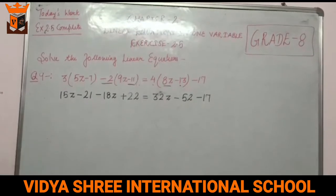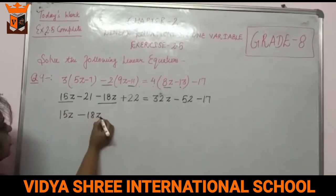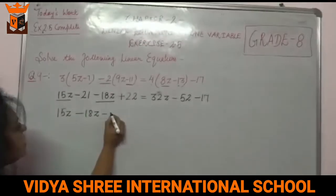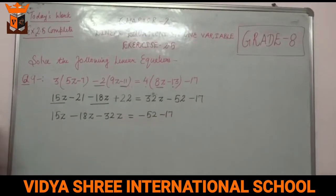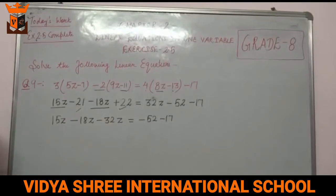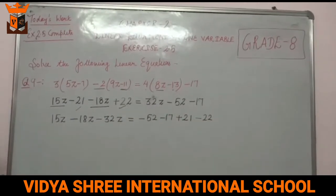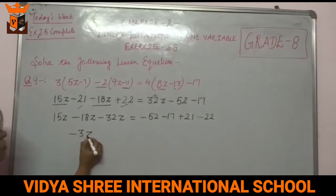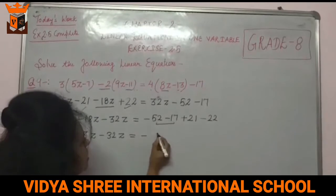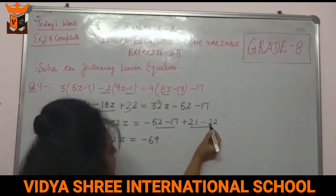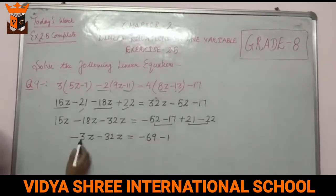Now collect all Z terms on the left and numbers on the right. Left: 15Z minus 18Z minus 32Z. Right: minus 52 minus 17 plus 21 minus 22. Calculating: 15 minus 18 is minus 3Z, minus 32Z gives minus 35Z. Numbers: 52 plus 17 is 69, plus 21 minus 22 gives minus 1, total minus 70.